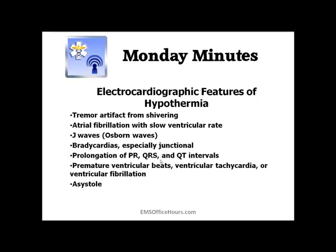To summarize the EKG features: you get that shivering artifact, possibly atrial fibrillation, the J wave or Osborne waves, junctional bradycardias, prolongation of the P-R, QRS, and QT intervals, premature beats, PVCs, V-tach, V-fib, and of course asystole. Ventricular arrhythmias are the most common mechanism of death in hypothermia patients. You might actually see V-tach and V-fib more commonly during the rewarming process, especially as the body's temperature rises between 28 and 32 degrees Celsius.